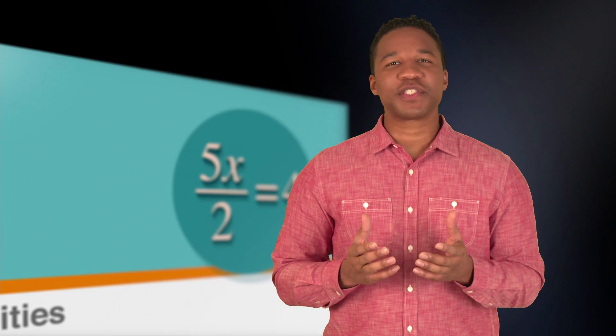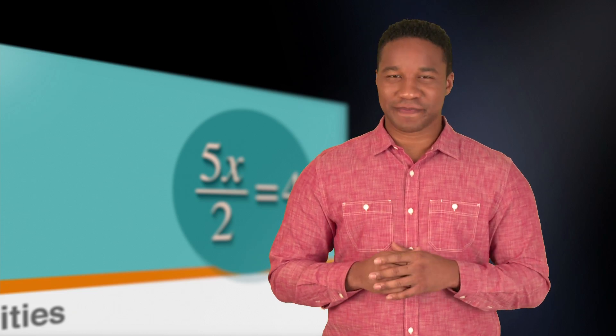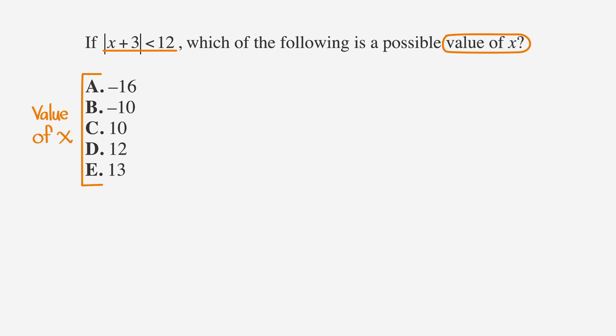Another type of question you might encounter involves absolute values and inequalities. If the absolute value of x plus 3 is less than 12, which of the following is a possible value of x? A is negative 16, B is negative 10, C is 10, D is 12, and E is 13. As always, we'll do our underlining, circling, and labeling. Now, if we're looking at an absolute value inequality, we're actually looking at two inequalities — one where x is positive and the other where x is negative.